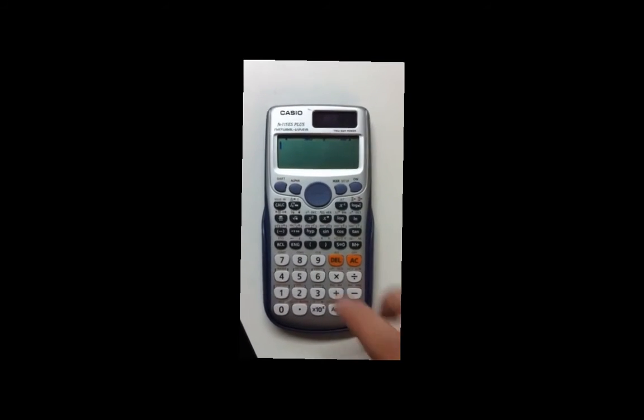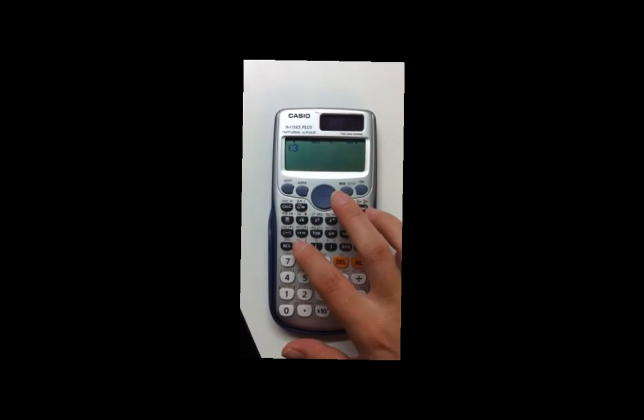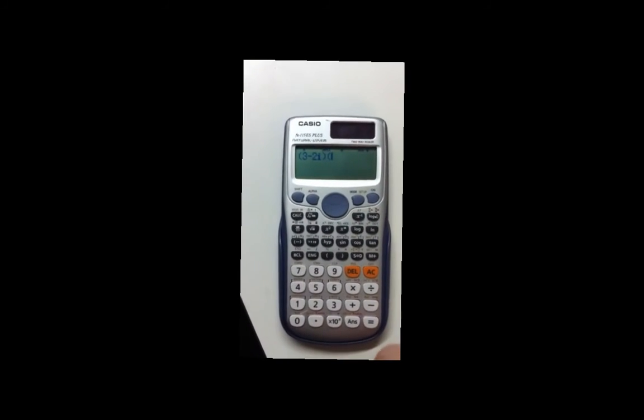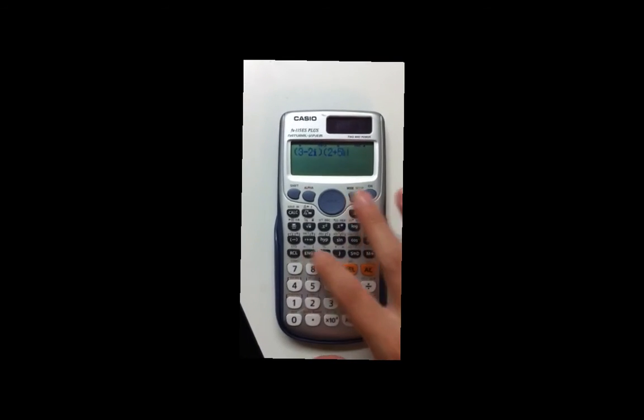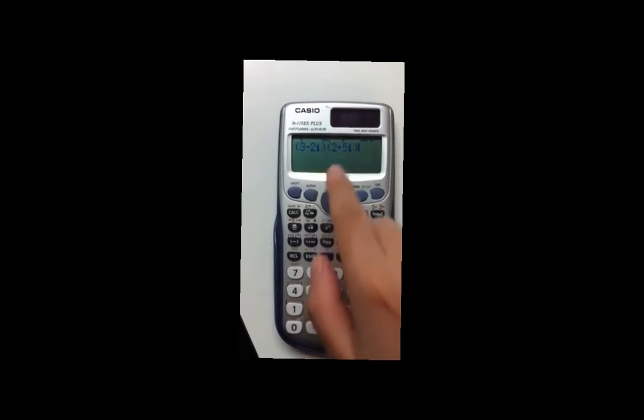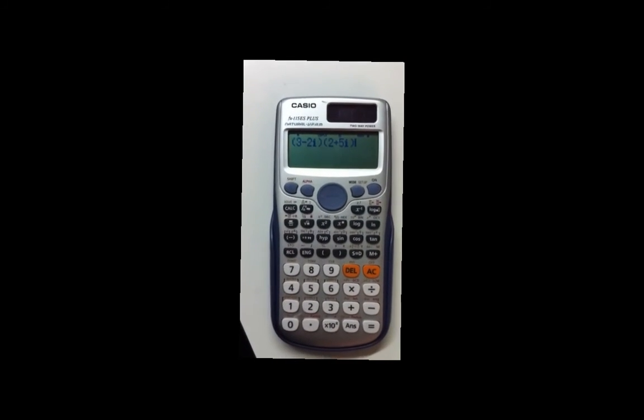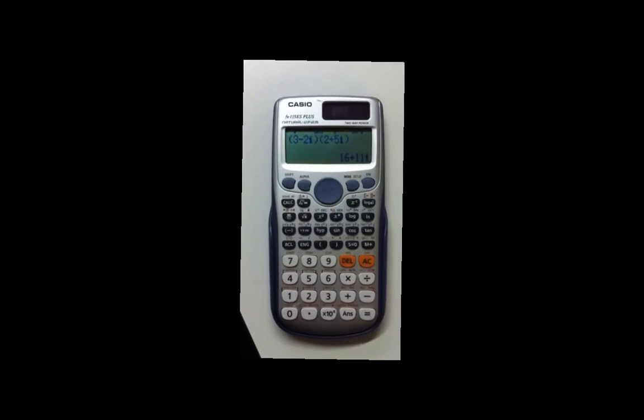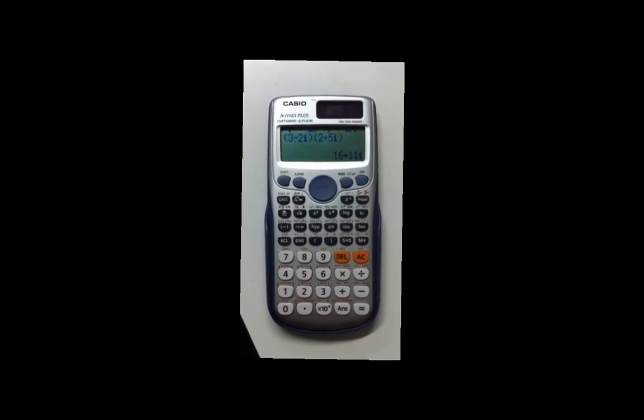And the final example is 3 minus 2i, and then I'll put parenthesis again, 2 plus 5i. You can see here that the calculator knows that when you don't have a positive or a negative between the parenthesis, you're multiplying. So you put equal, and you get your answer. This is an amazing calculator.